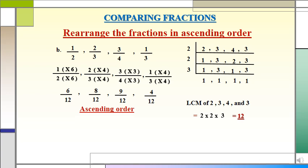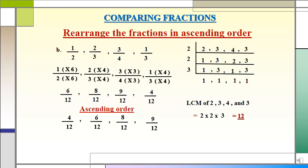Since the denominators are the same, the fraction with a smaller numerator is a smaller fraction. So 4/12 is the smallest fraction. Now we have arranged the like fractions in ascending order from small to big. Let's finally conclude by writing the answer. 4/12 is the same as 1/3, so the smallest fraction is 1/3.